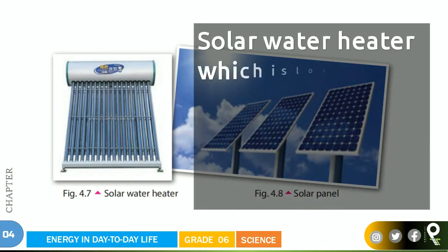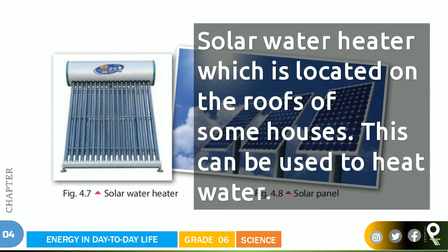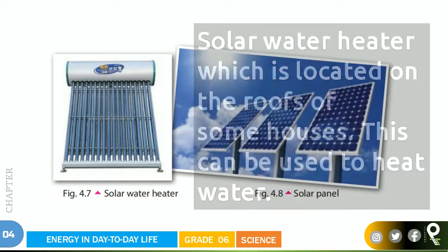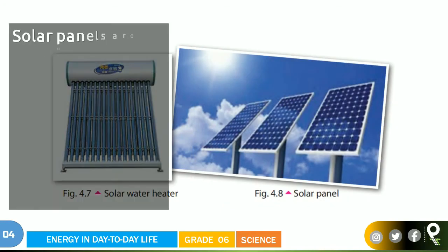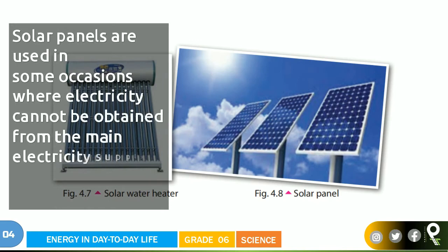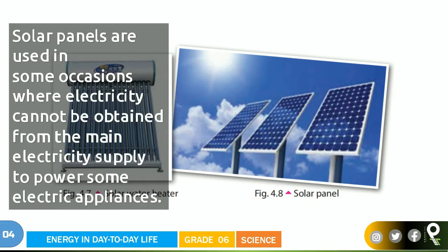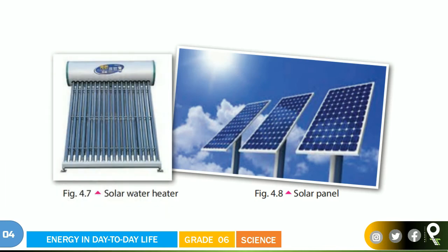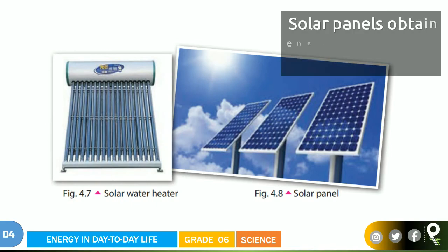A solar water heater is located on the roof of some houses and can be used to heat water. Solar panels are also used in occasions where electricity cannot be obtained from the main electricity supply, to power some electric appliances. Some streets and roads are using solar panels to light the street lights. Solar panels obtain their energy from sunlight.